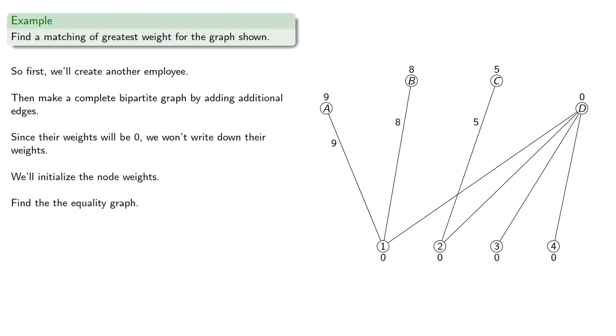Now it might strike you as peculiar here that D can do any of the jobs. But remember, D represents the person we're going to hire. So we don't yet know what proficiencies they're going to have, we're actually trying to figure out which ones would be most useful. So from the equality graph, we'll find a matching.